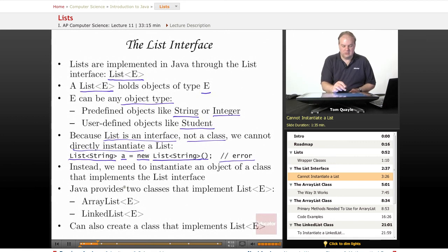Instead, what we need to do is instantiate an object of a class that implements the list interface. And in Java, the standard Java library provides two classes that implement the List<E> interface. And those are ArrayList and LinkedList.